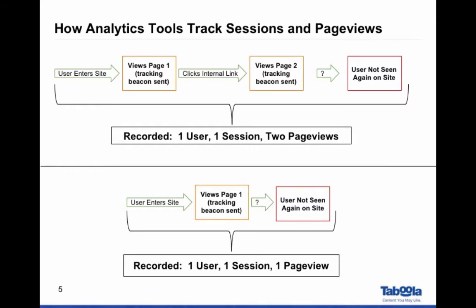I want to take a step back and talk about how the analytics packages actually track this. If a user enters your site and views a page with Google Analytics installed, a little beacon goes out and tells Google: here's the page they're on, along with a bunch of other information. If that user clicks another link within your site and goes to another page, that beacon gets sent out again. Google Analytics is smart enough to know it's the same user — they're still on the site and have now seen two page views.